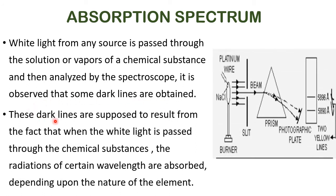These dark lines are supposed to result from the fact that when white light is passed through the chemical substance, radiations of certain wavelengths are absorbed depending upon the nature of the element. Here, using sodium as a sample — when white light is allowed to fall on the sodium sample, it will absorb a certain amount of energy depending upon its structure, jump to a higher energy level, and this absorption is recorded on the photographic plate. This complete setup is the spectroscope.